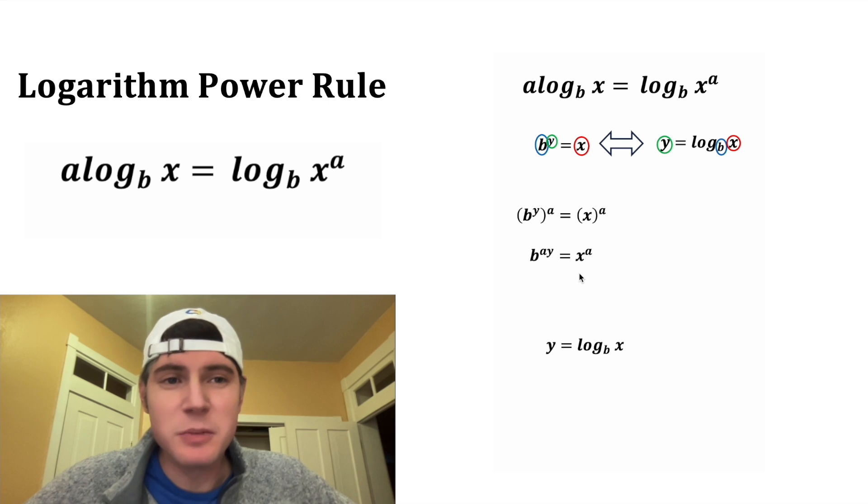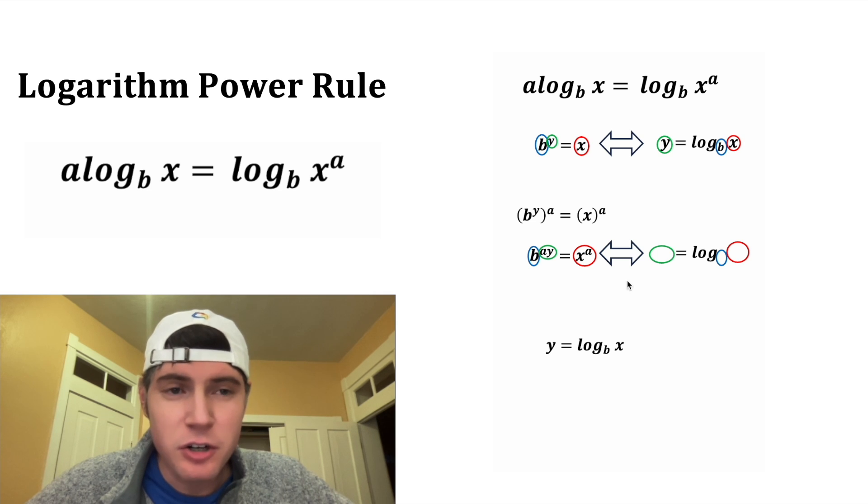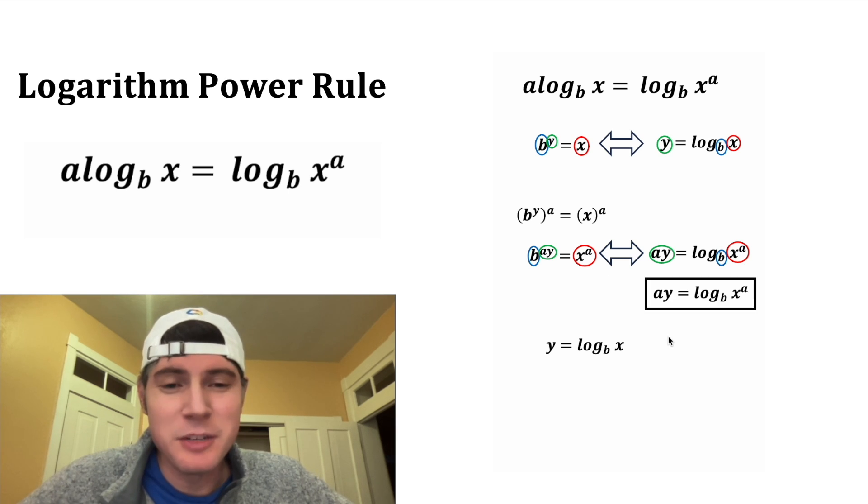And now we're back in exponent form. Let's identify these three parts again. And let's rewrite this in logarithmic form. This green circle will be a y, the base of the logarithm will be b, and the argument of the logarithm will be x to the a. And this looks important. Let's put a box around it.